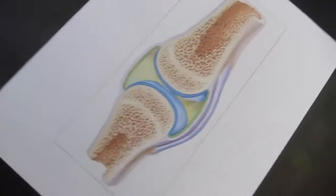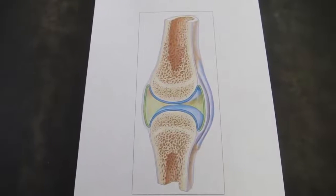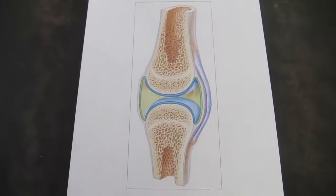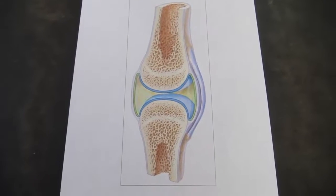Okay, so here is our illustration of a synovial joint, and we'll talk about what makes a synovial joint different from the other structural classes of joints that we have.